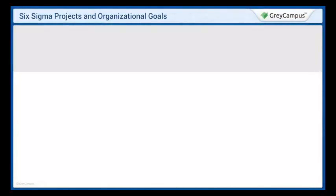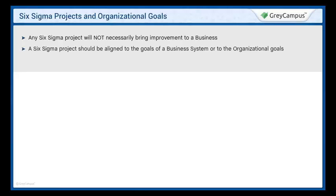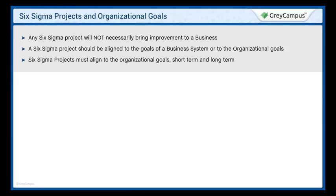Six Sigma projects and organizational goals. In a Six Sigma project, members of an organization are assigned specific roles to play. This highly structured format is necessary in order to implement Six Sigma throughout the organization.